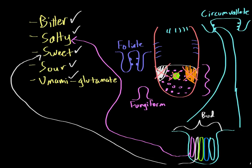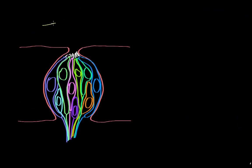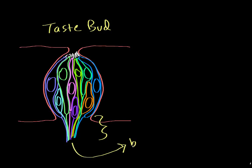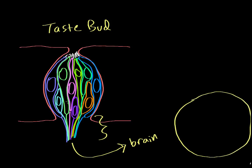What I want to talk about next is something known as the labeled lines model. Here we have a taste bud with all of the different types of cells, and each one of these cells is specialized to a particular one of the five tastes. Each cell has a little axon projecting from it, and what is interesting is that these axons actually remain separate all the way to the brain, where they synapse on different parts of the gustatory cortex.